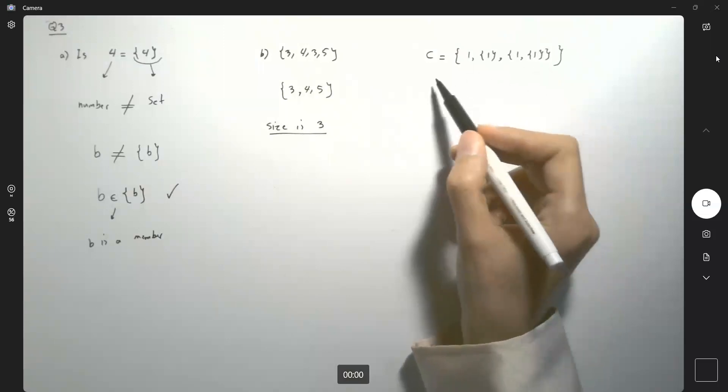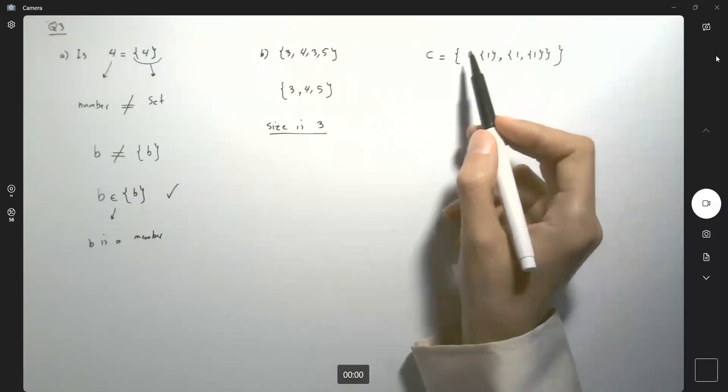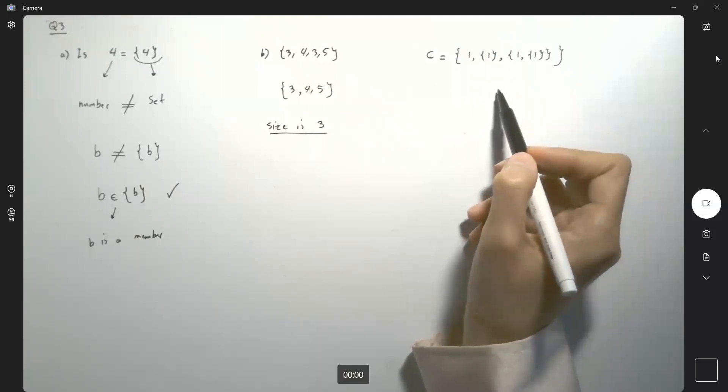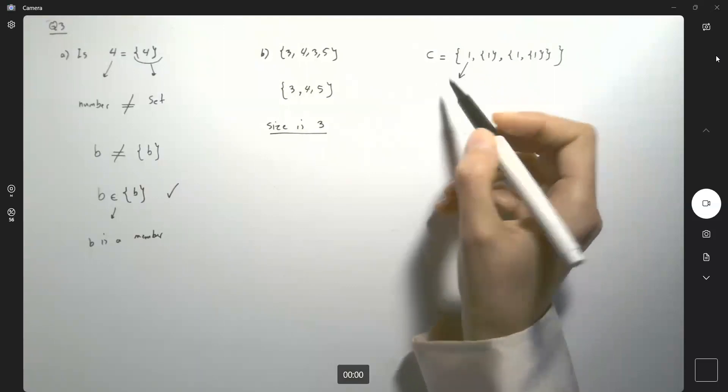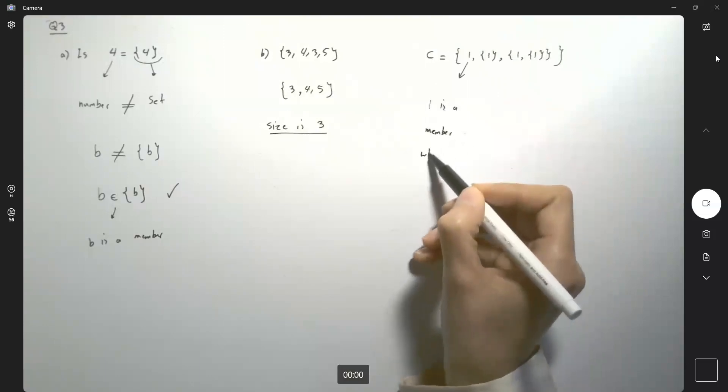What about this set? What is the cardinality of this set? Let us identify the members. It's a common mistake for students. The very first member is one. One is a member, which is a number.